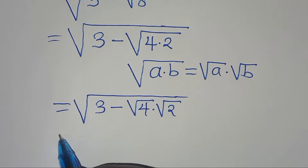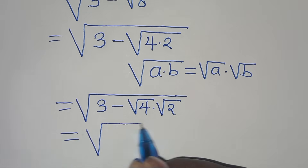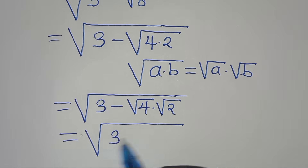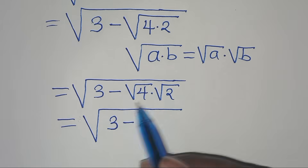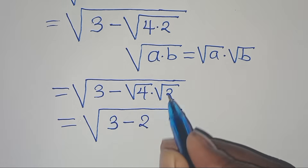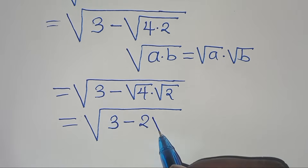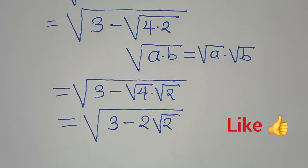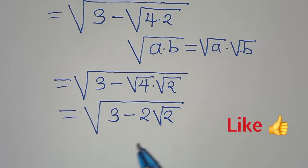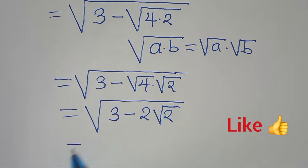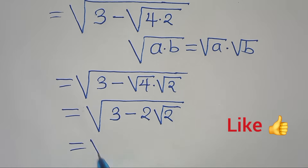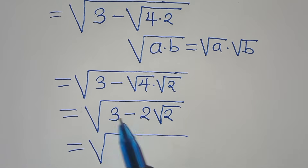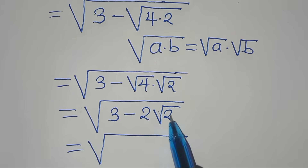This implies that here we have the square root of 3 minus square root of 4 — this is 2 — then square root of 2. So now we have the square root of 3 minus 2 square root of 2.